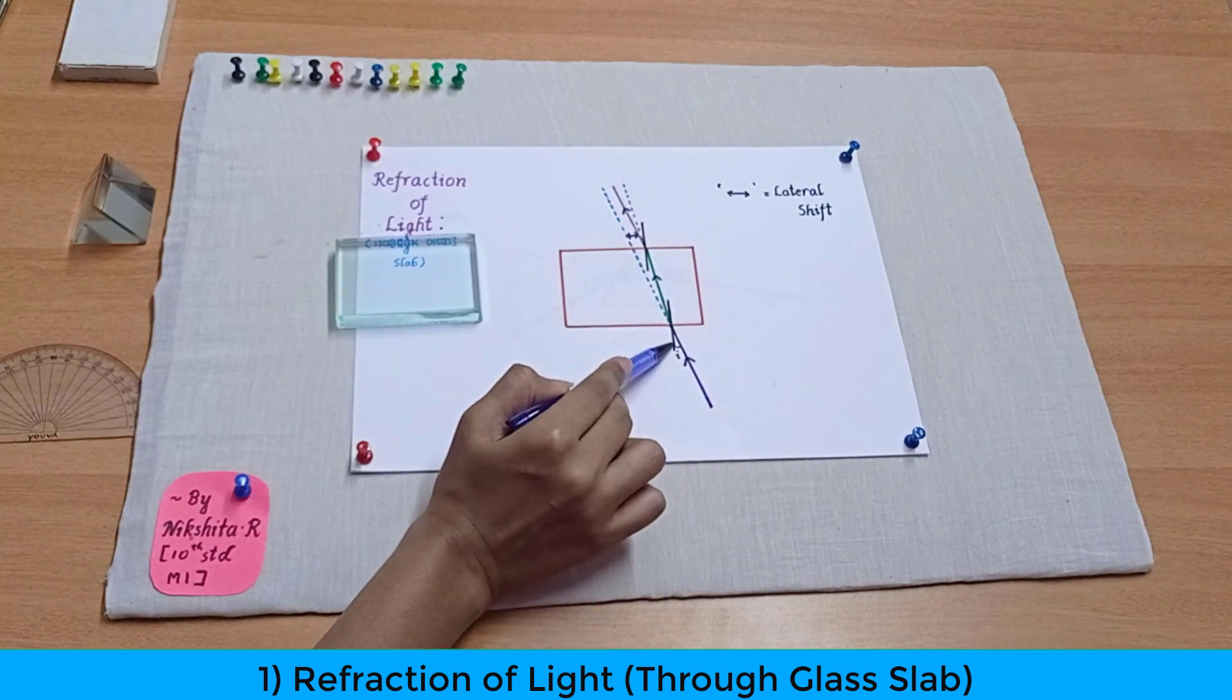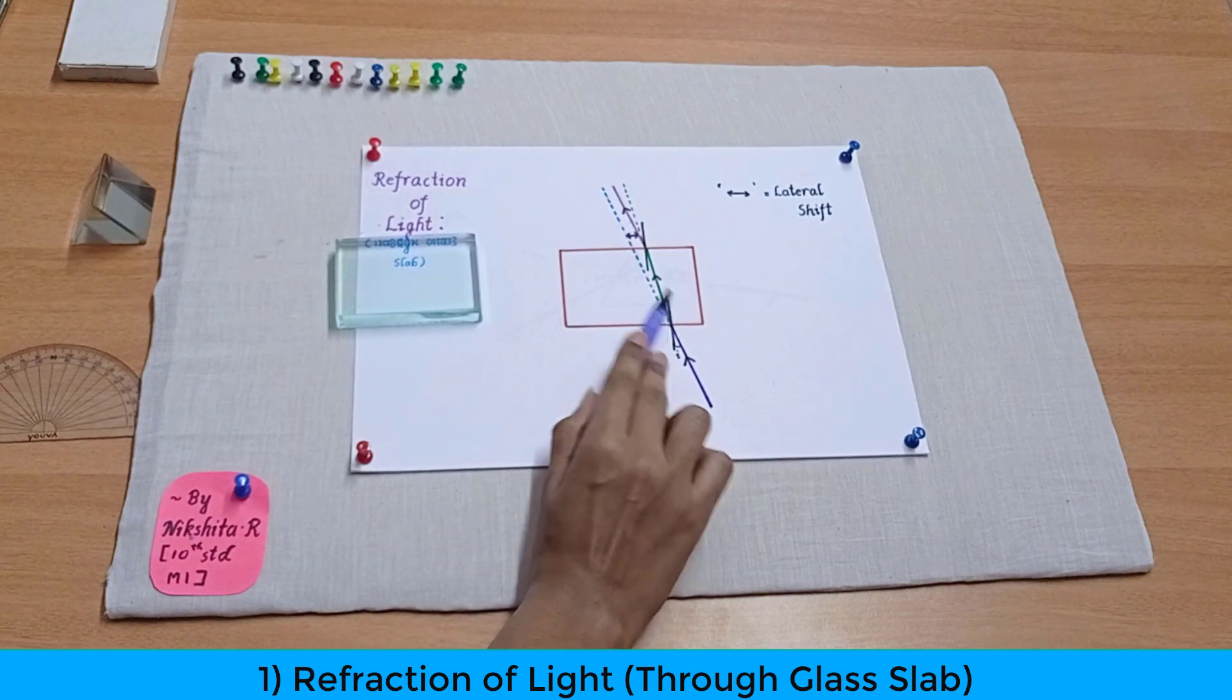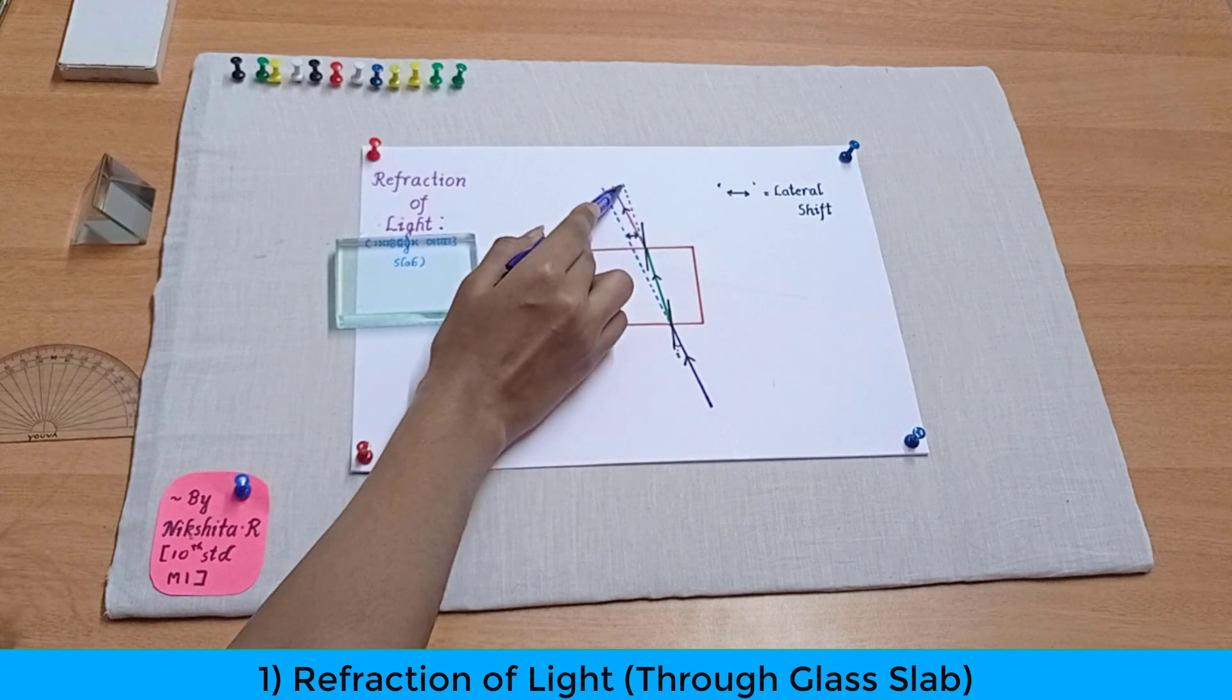So now what happens is the light gets bent towards the normal. The black line represented over here is its normal and the green line which is there over here is bending towards the normal. And now again it should have gone straightly like this right? Again why did it bend?